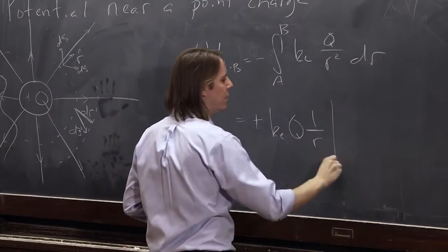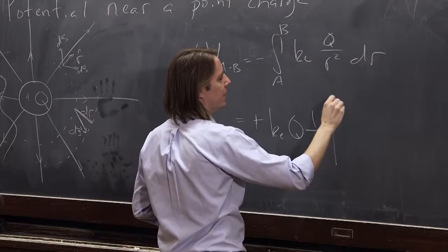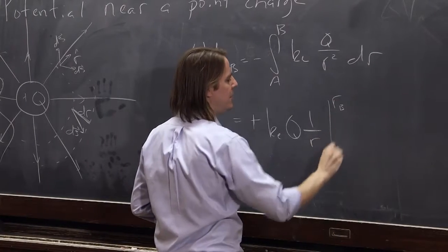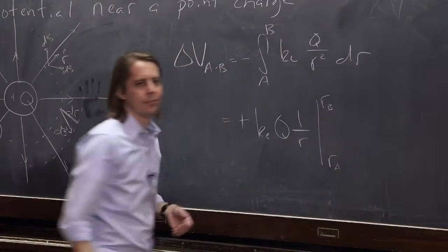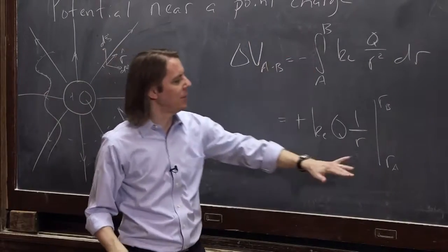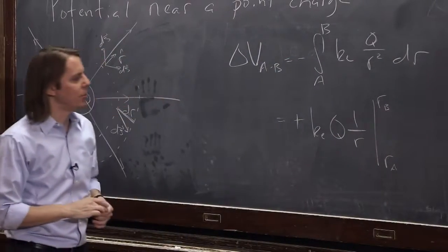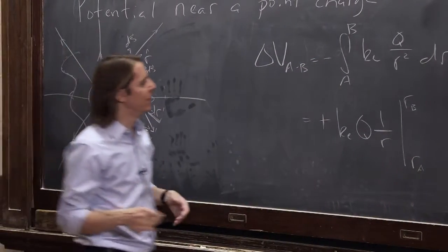And it's evaluated from, let's see, rb to ra. So we'll say the points a and b mean at the radius ra and at the radius rb. So if you want to evaluate that,